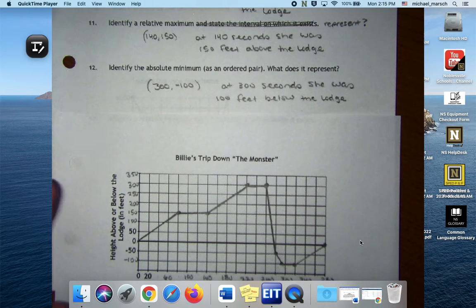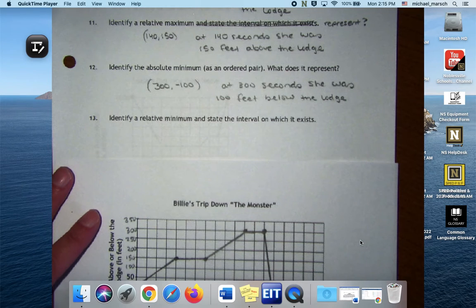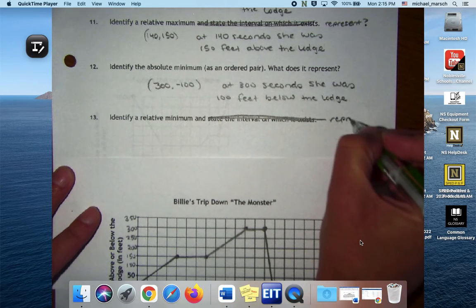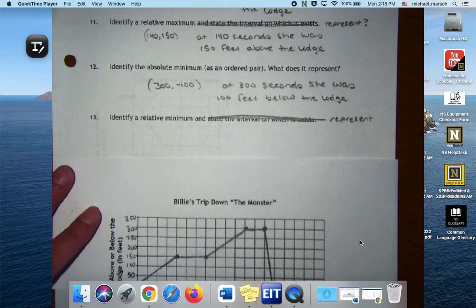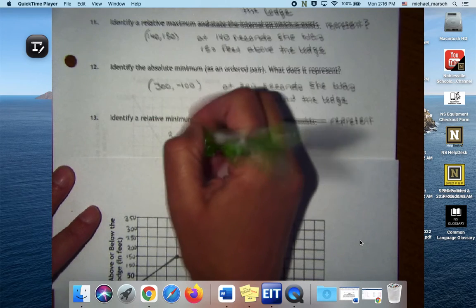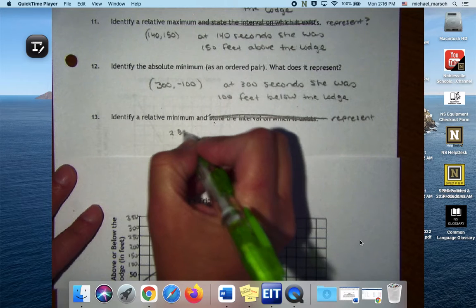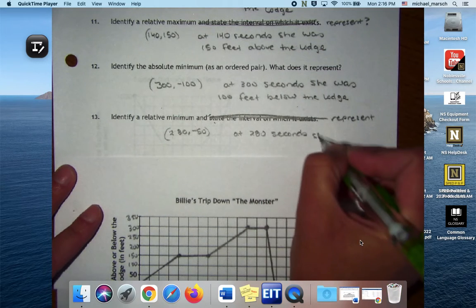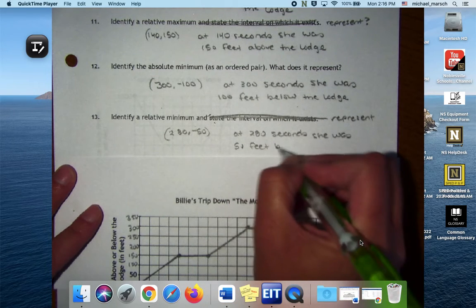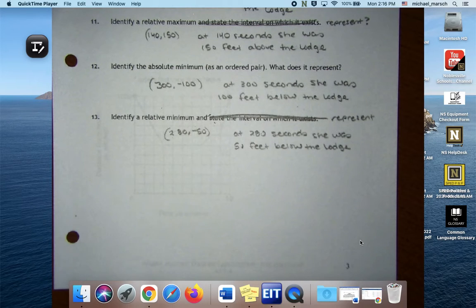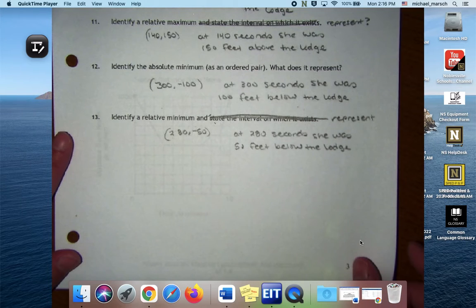Identify a relative minimum, state the interval. So let's go ahead and cross out 'state the interval,' just write the word 'represent.' Okay, are you sure? Yeah. So I'm gonna say 270 negative 50. No, I'm sorry, 280 negative 50.